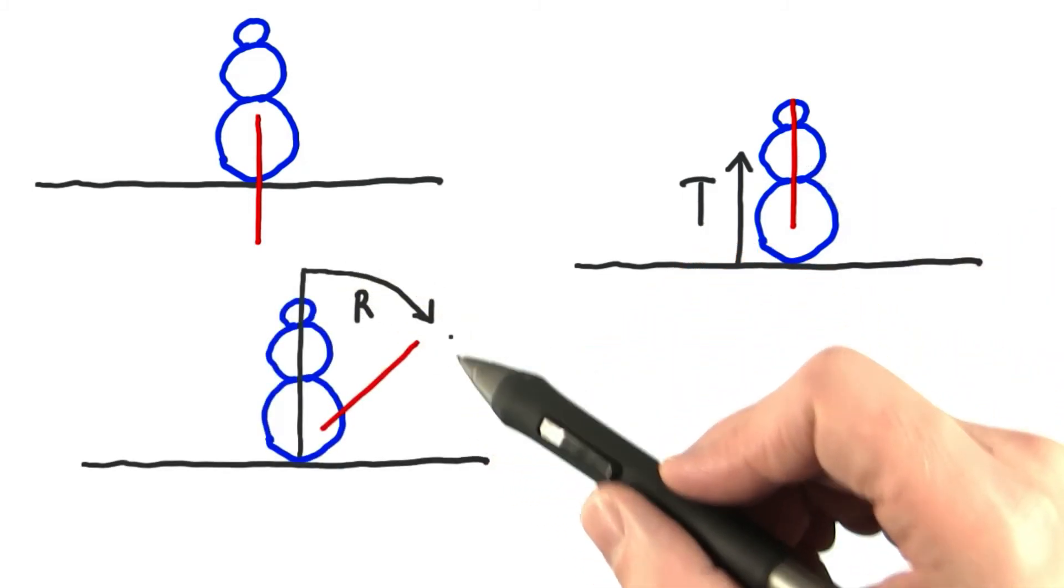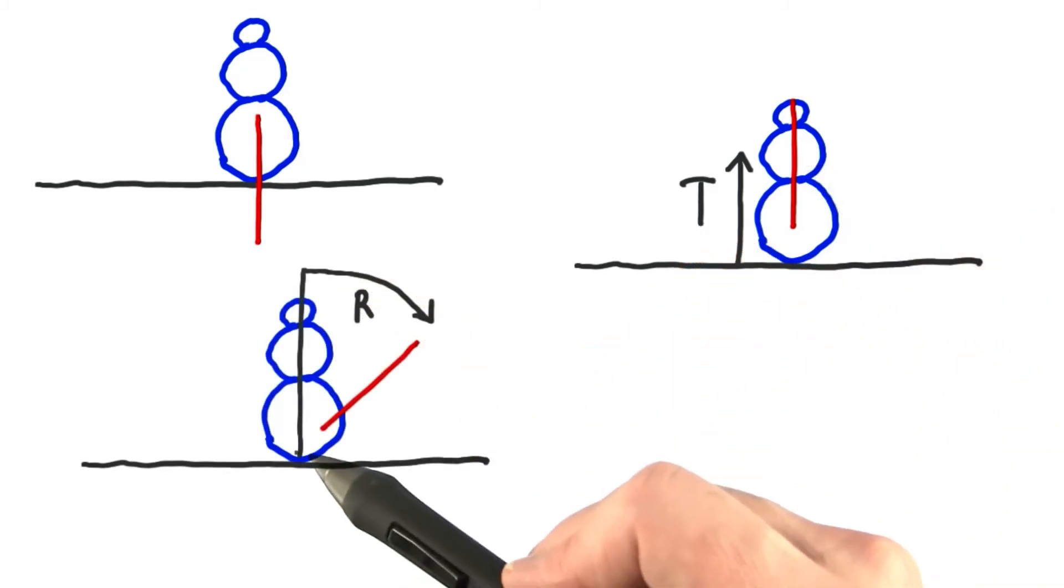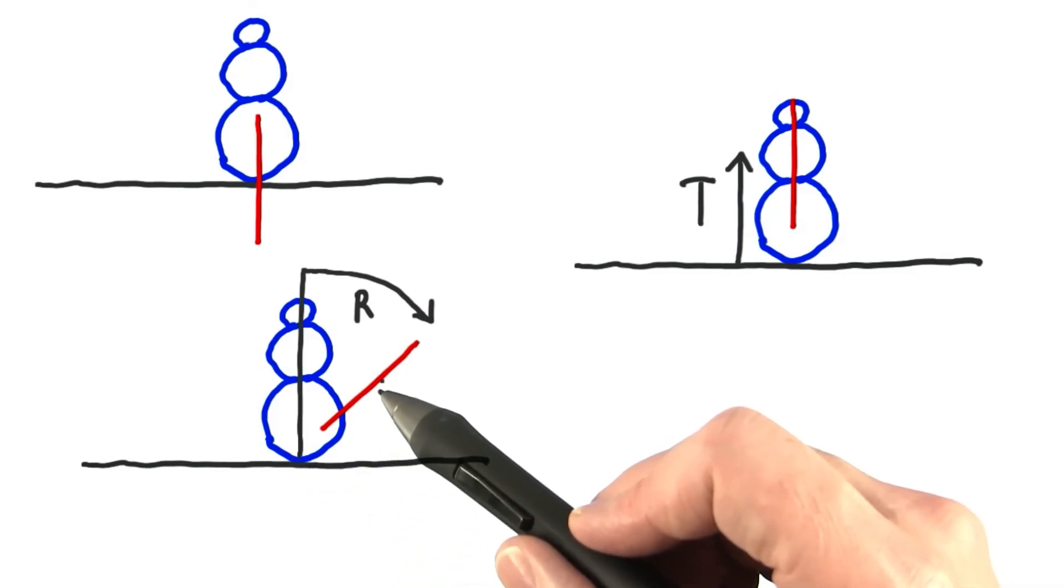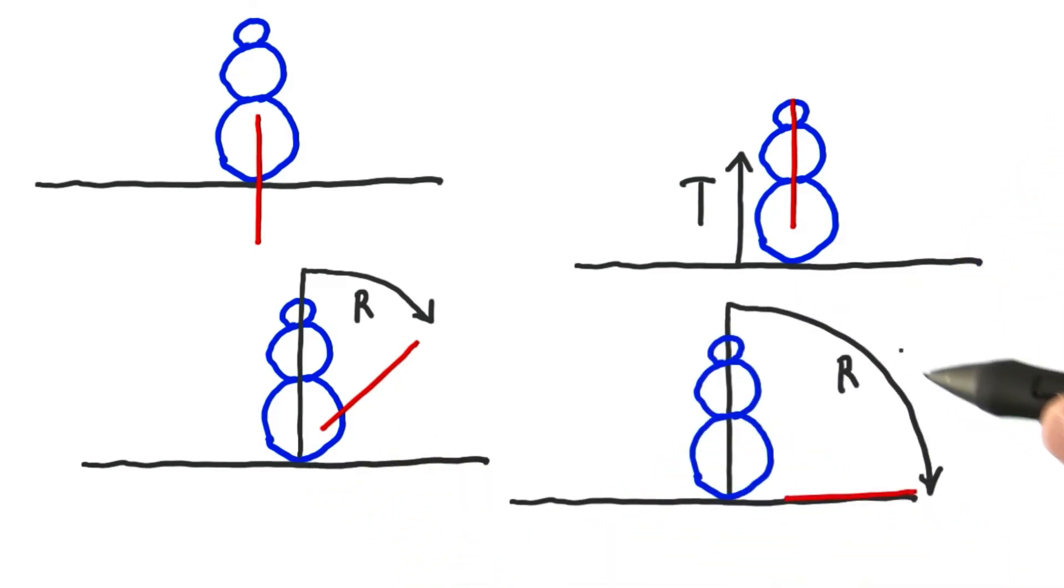However, when we then apply a rotation, the object rotates around the origin down here instead of rotating around its center. Finishing the 90 degree rotation, the stick's landed on the ground.